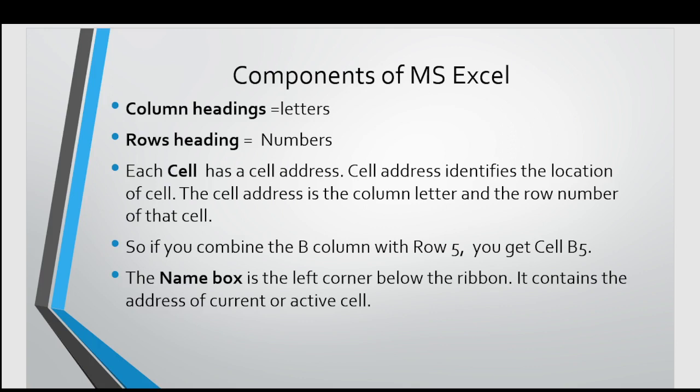Next is column headings that are represented by letters, and row headings that are represented by numbers. Each cell has a cell address. Cell address identifies the location of a cell. The cell address is the column letter and the row number of that cell.